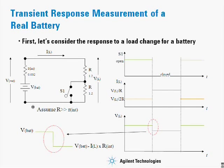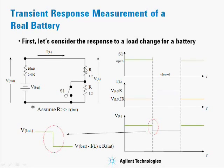Transient response measurements of a real battery. Let's first consider a response to a load change for a battery. On the left, we have an actual battery shown with its internal voltage and internal resistance. On the right, we have a load that can be switched from 1.2 ohms to 2.4 ohms.